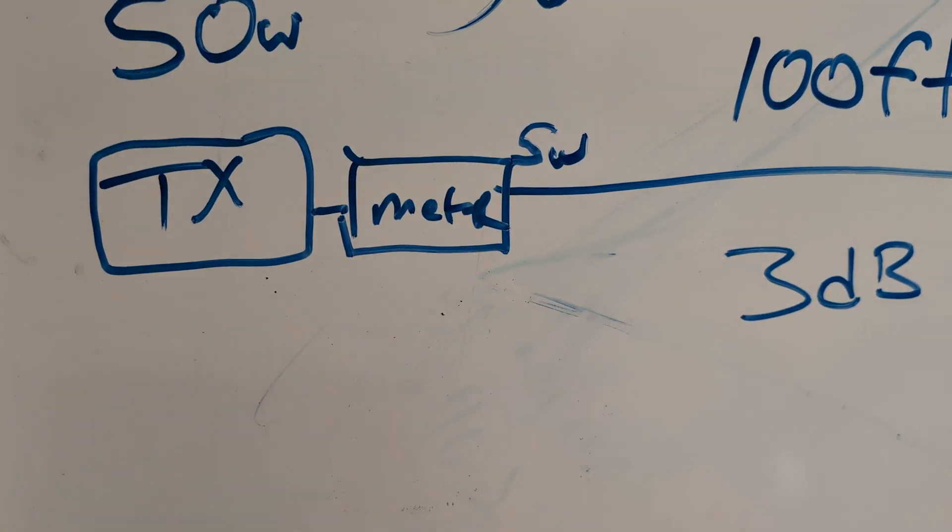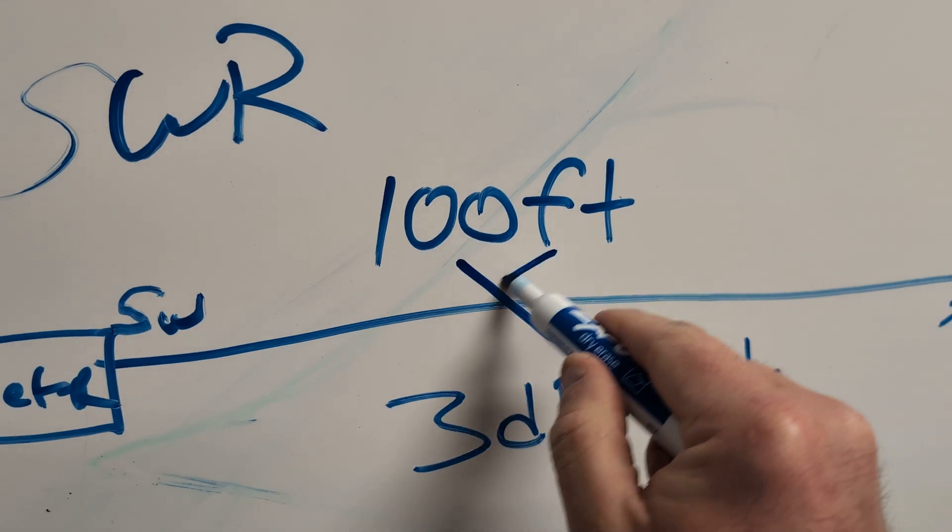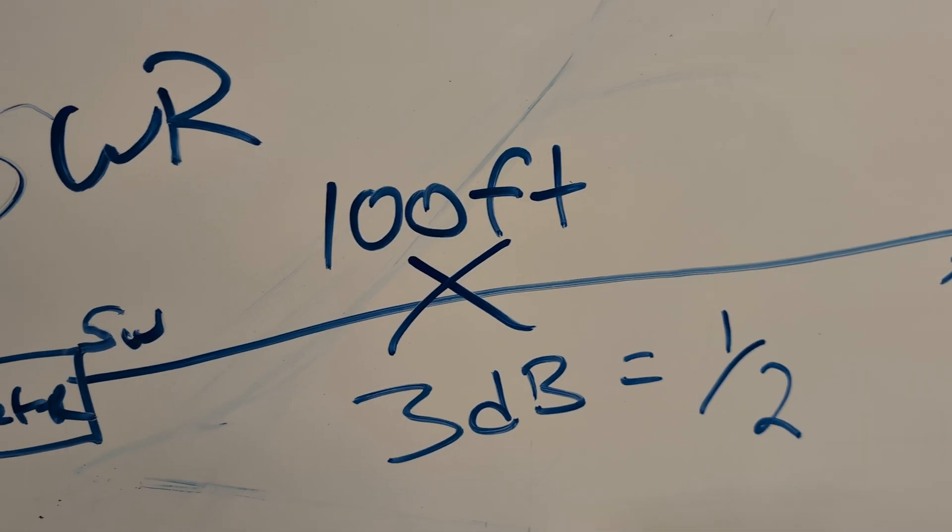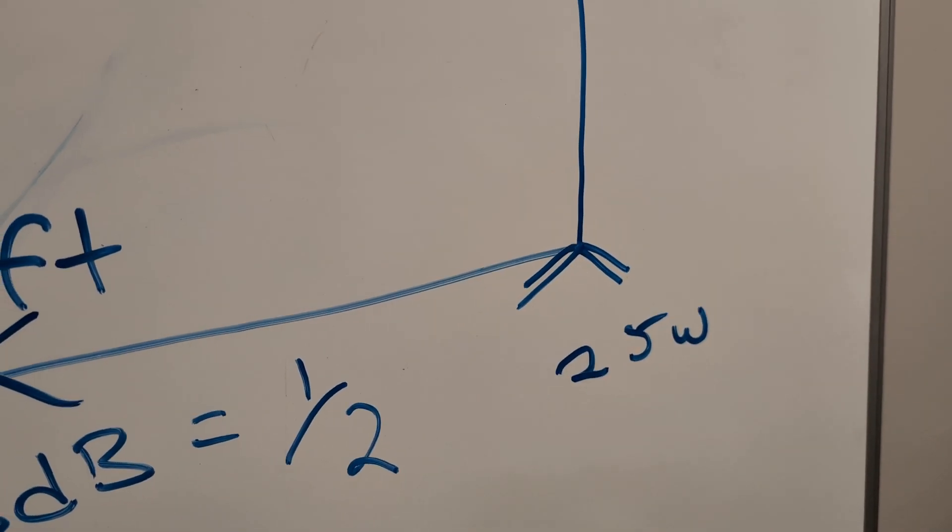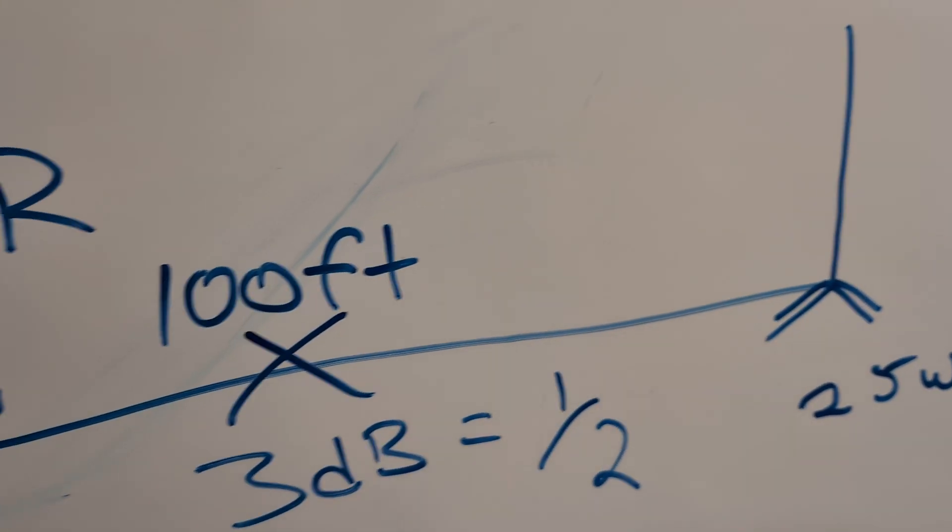So you're not going to have a true SWR unless you eliminate the coax in between and put a short jumper between the meter and your antenna. That's the only way to get a good, true SWR. So it's really simple.